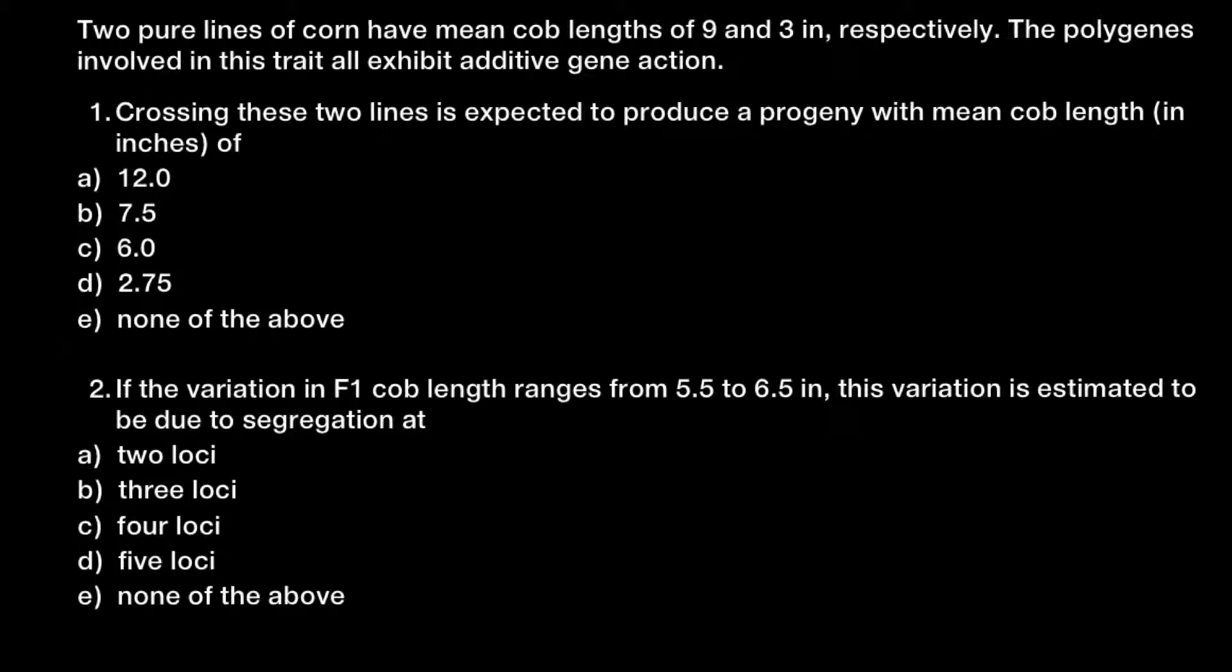According to our problem, we have two lines with cob lengths of 9 and 3 inches. So we can suggest that the genotype of one would be homozygous dominant and another homozygous recessive with 9 inches and 3 inches respectively. That gives us that each dominant allele would give 4.5 inches each and each recessive allele would give us 1.5 to the cob length each.